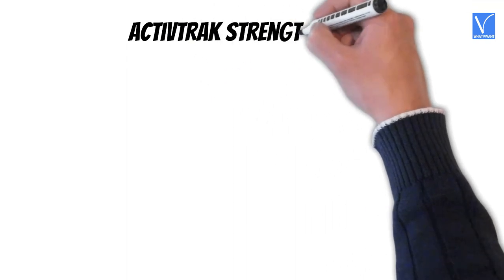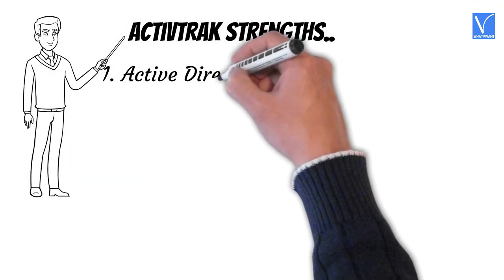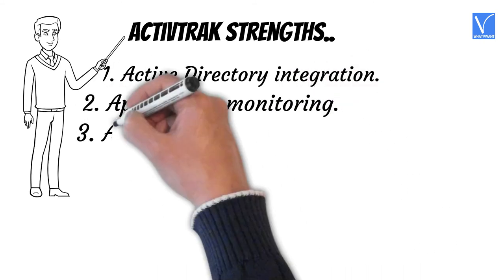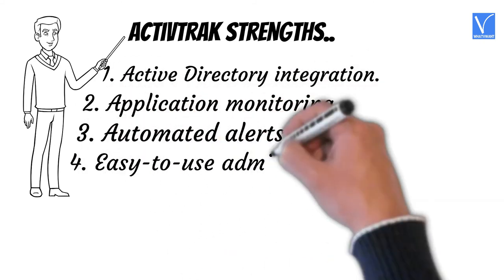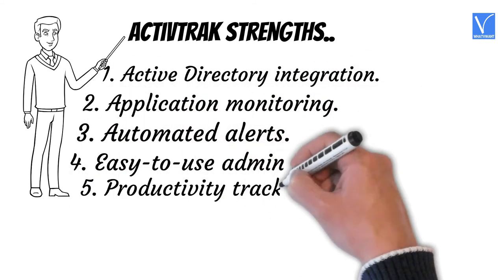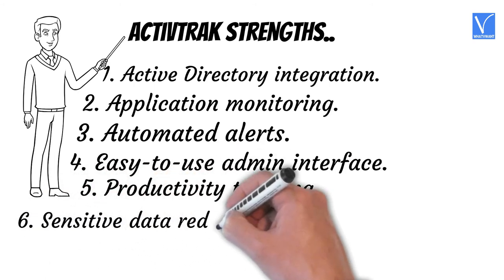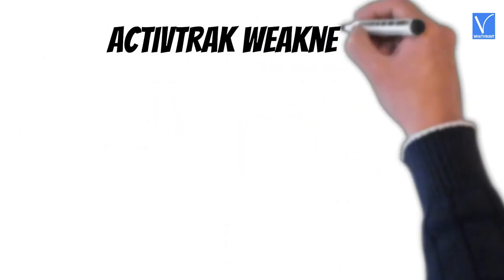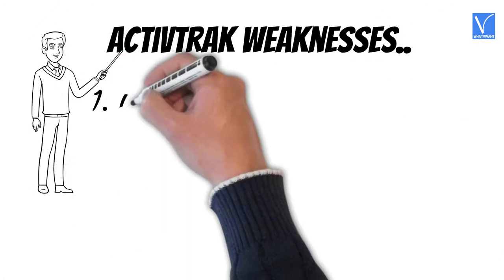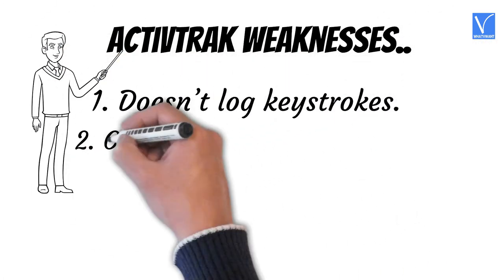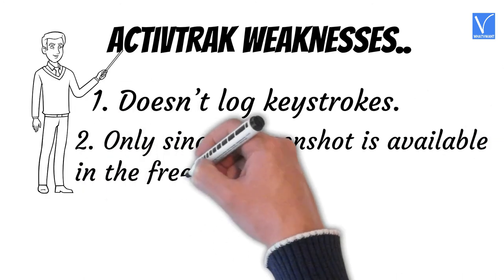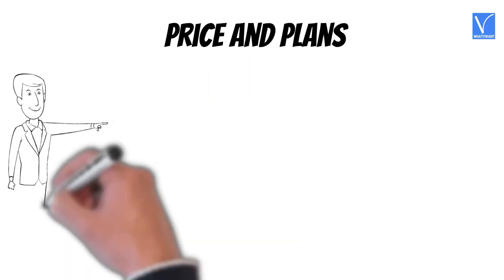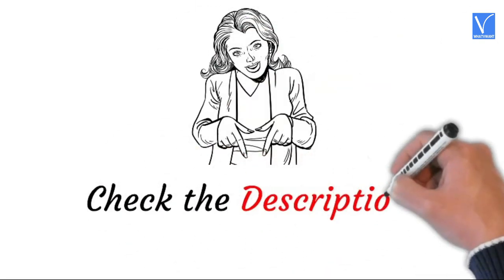ActiveTrack strengths: Active Directory integration, application monitoring, automated alerts, easy-to-use admin interface, productivity tracking, and sensitive data redaction and user privacy features. ActiveTrack weaknesses: doesn't log keystrokes, only a single screenshot is available in the free plan, and no blurred screenshot option. Price and plans of ActiveTrack are exhibited on the screen — the product link is provided in the description.